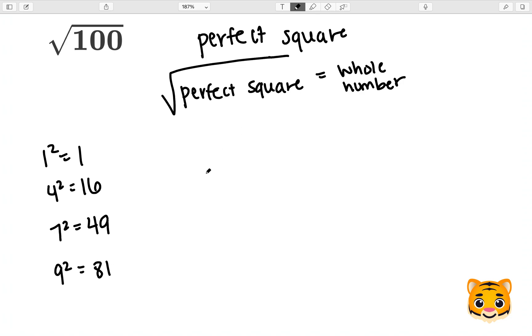Now we want to think about what number times itself gives us 100. The answer to this will be 10 times 10. If we multiply 10 times 10, we can see we use 0 times 0 giving us 0,